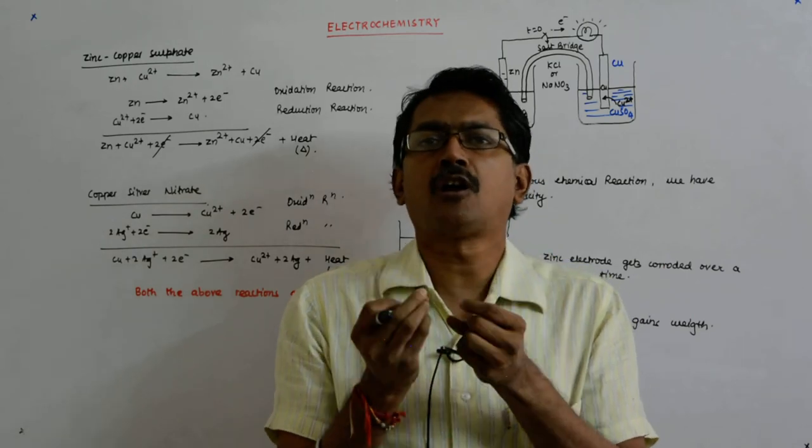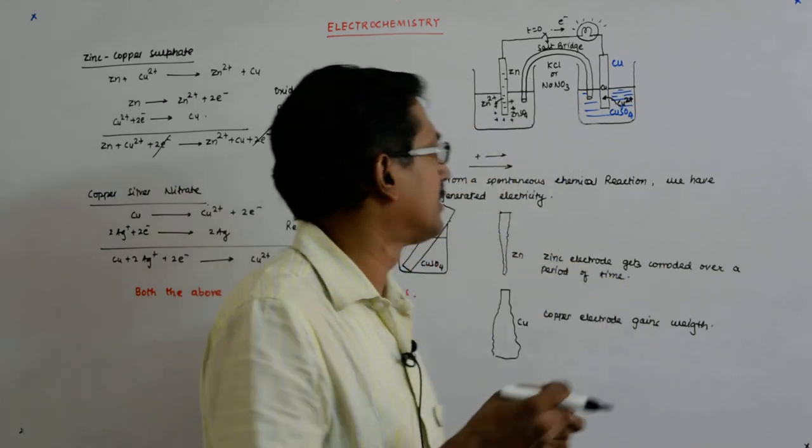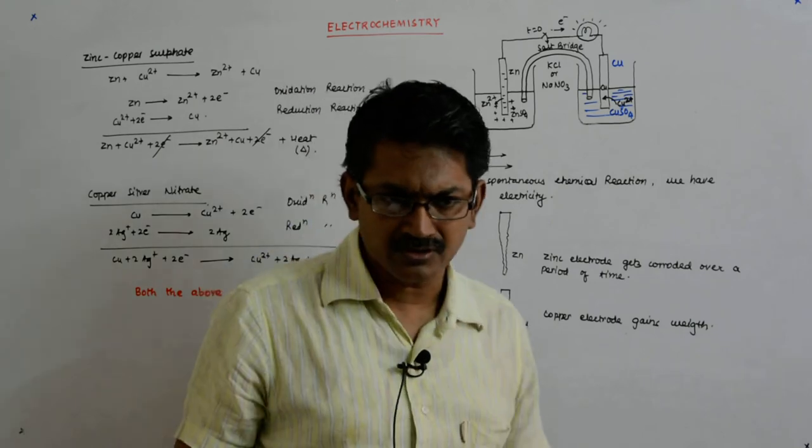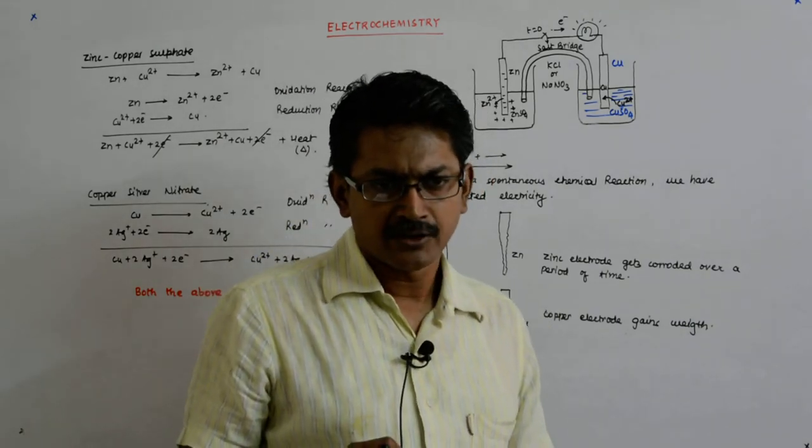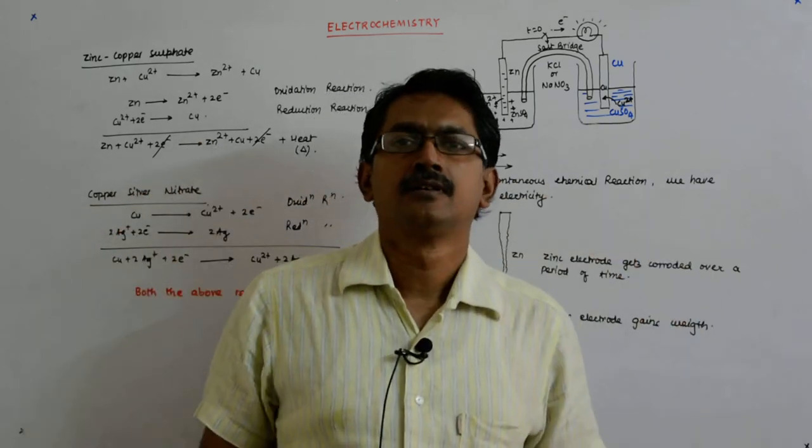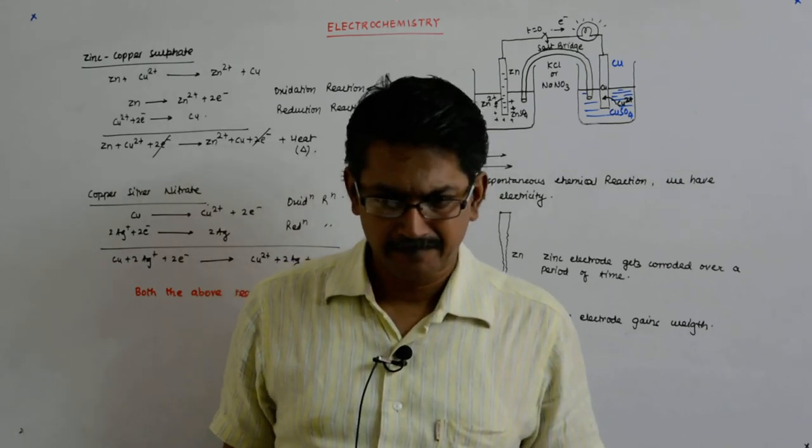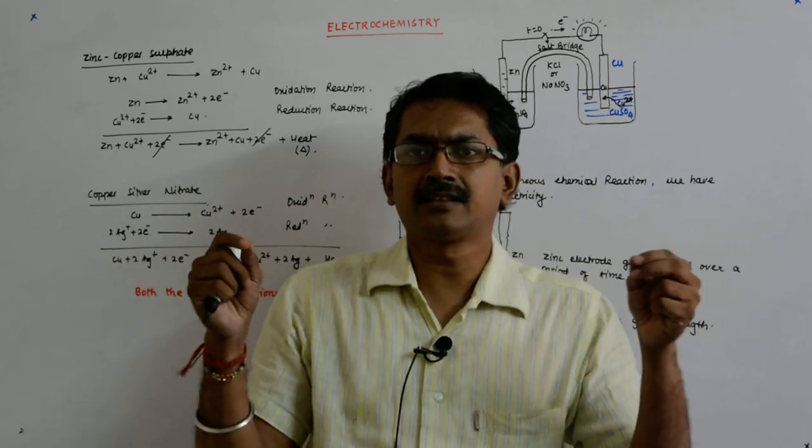Here, by separating the two electrodes in their respective salt solutions, you have achieved what? That electron transfer is tappable now. You are able to tap it, and it has happened by physically removing them and connecting it through a wire.